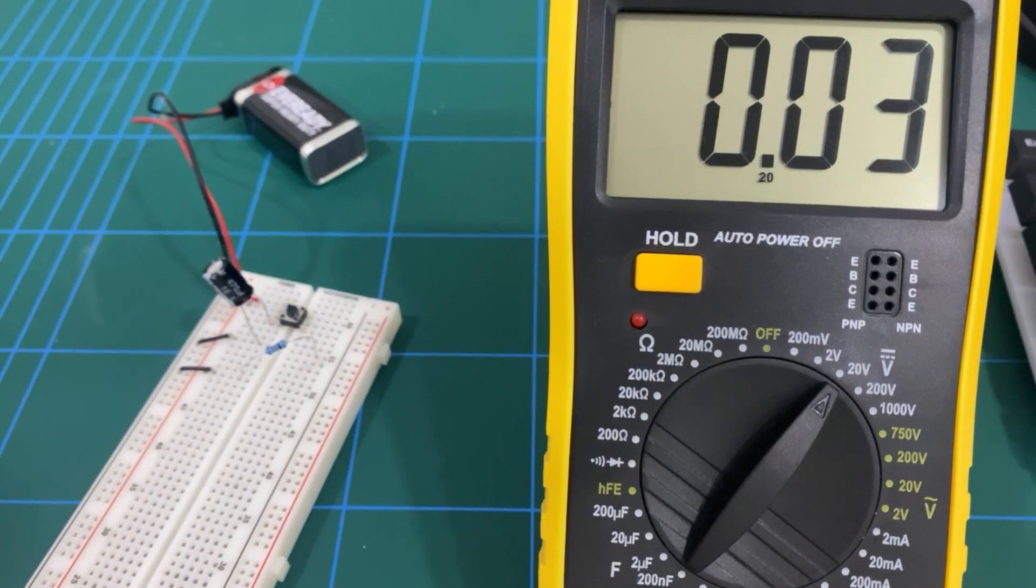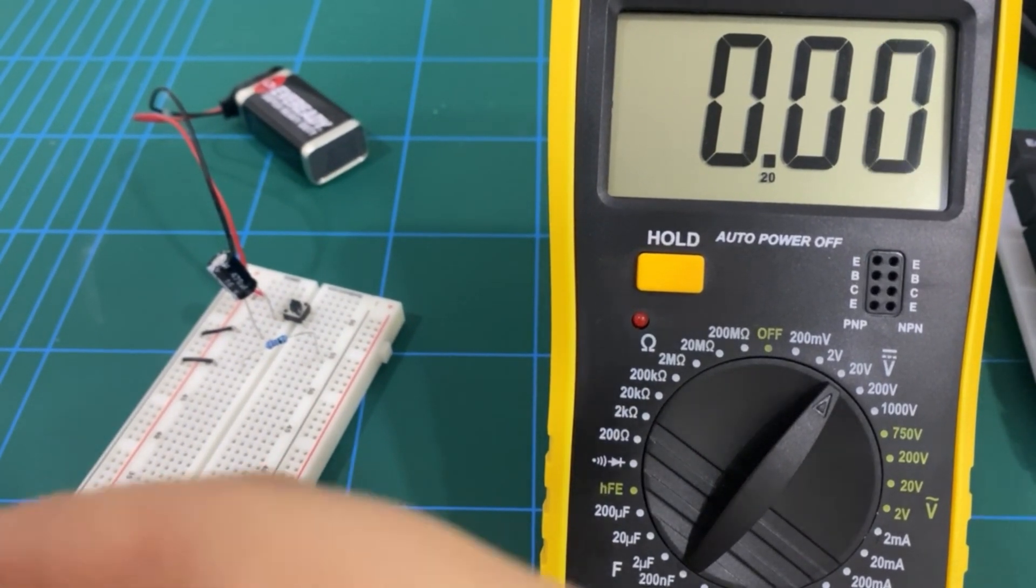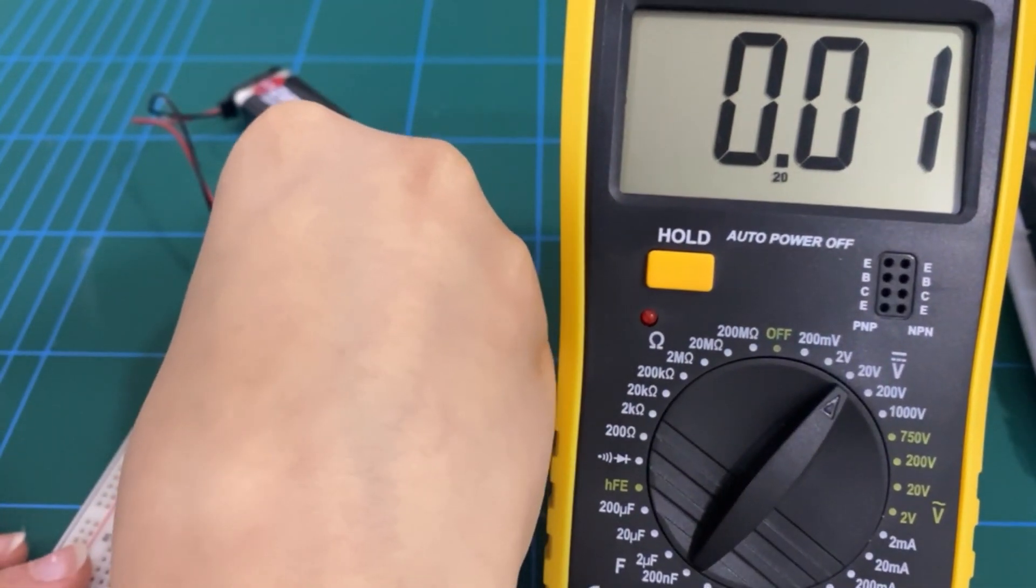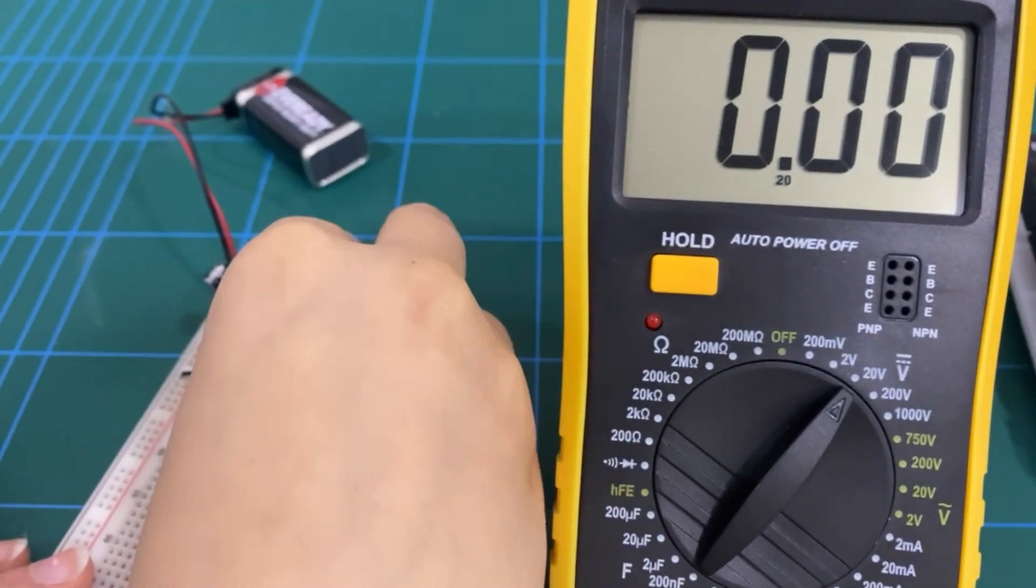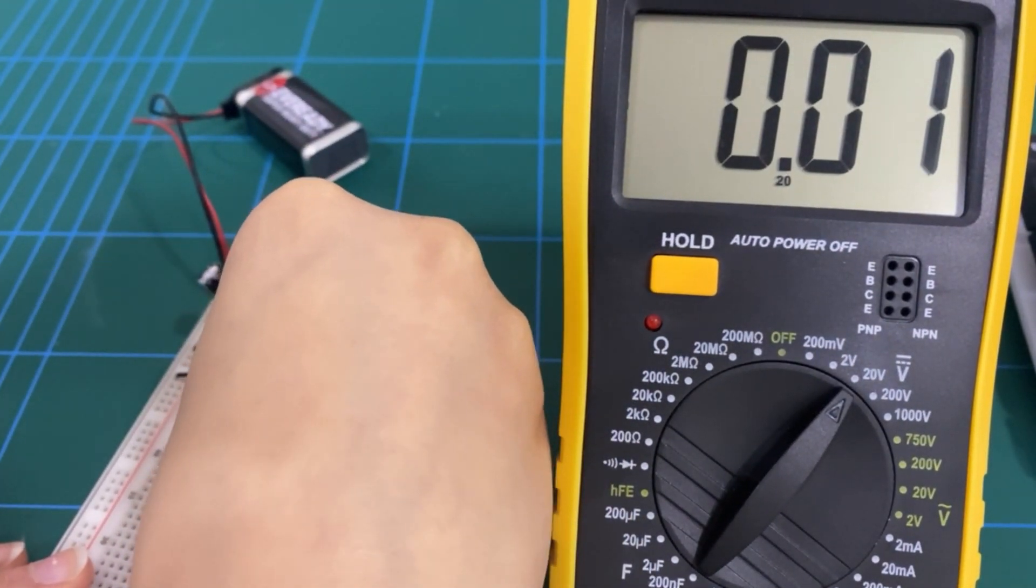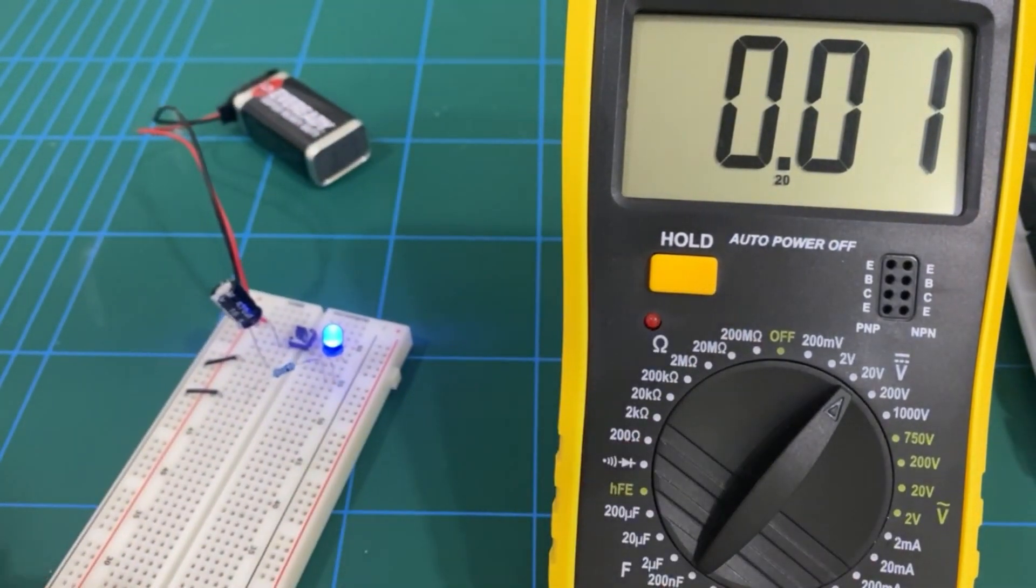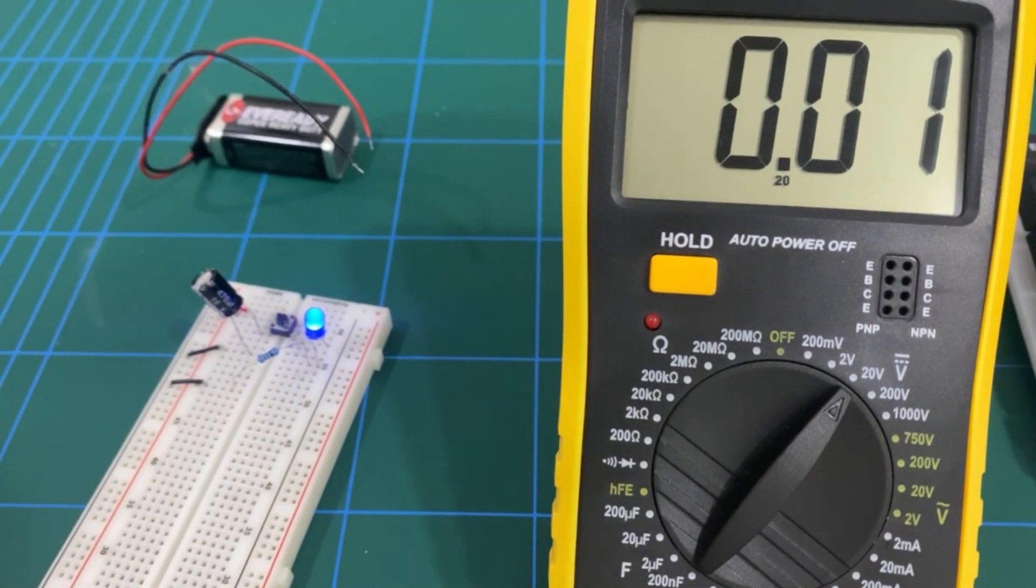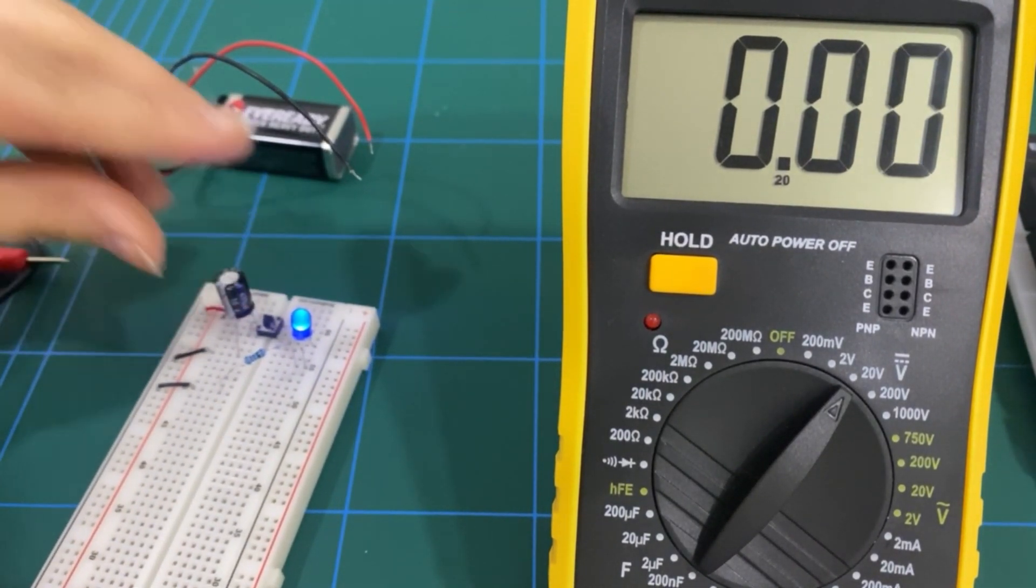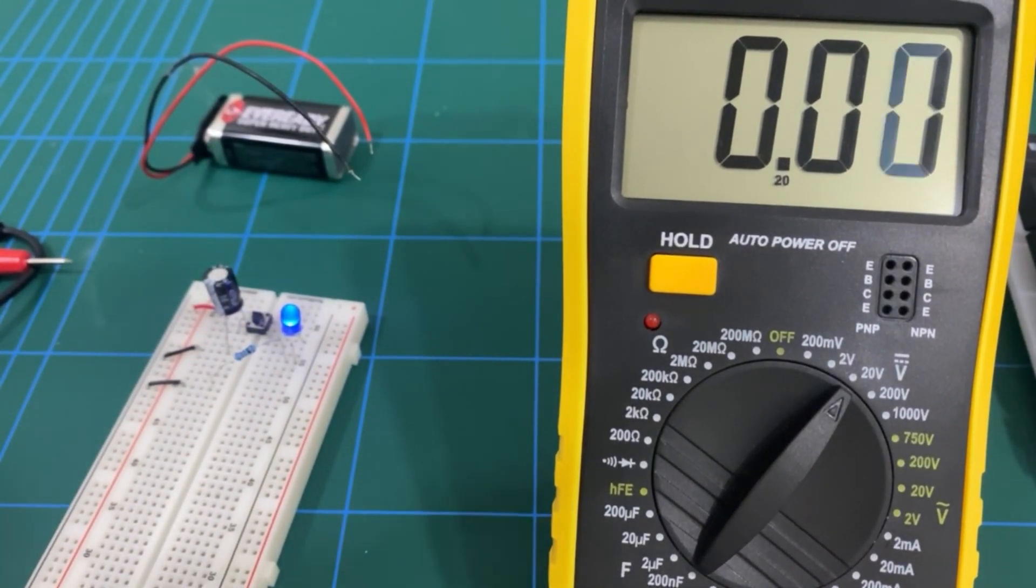And now, by plugging in the LED and by unplugging the power supply, we can see that the capacitor acts as a small battery for the LED.